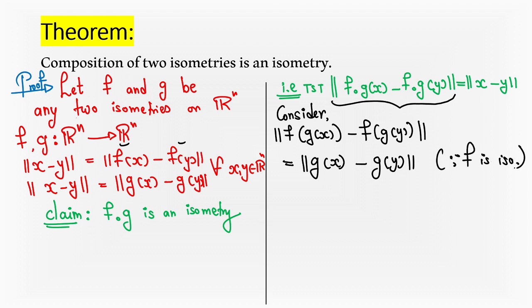Now this is a direct result. Now what is this? Norm of g(x) - g(y). Hence, whatever is required is proved - that composition of two isometries becomes an isometry. This is a wonderful theorem.